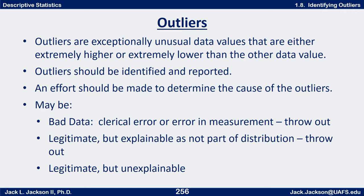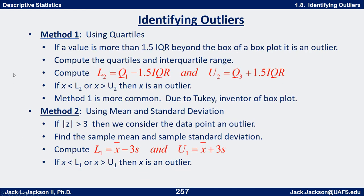Sometimes an outlier is legitimate but you just really have a hard time explaining it. If that's the case, do your best but at least report it and identify it. Now how do we identify something as an outlier? I've got two methods here. One uses the quartiles and one uses the mean and standard deviation. The method using the quartiles is by far the most common and it's due to Tukey, who was the inventor of the box plot.